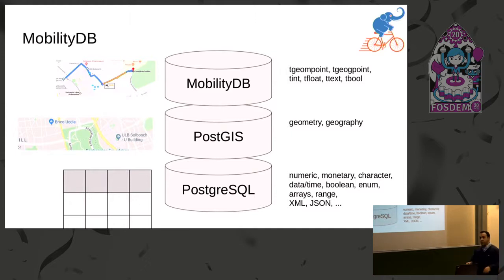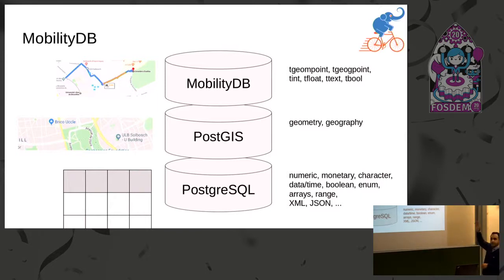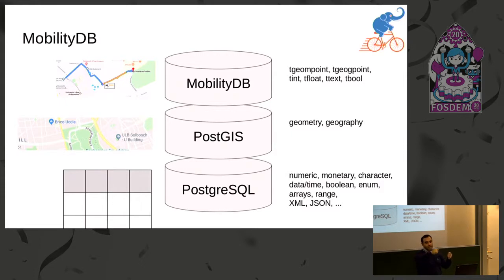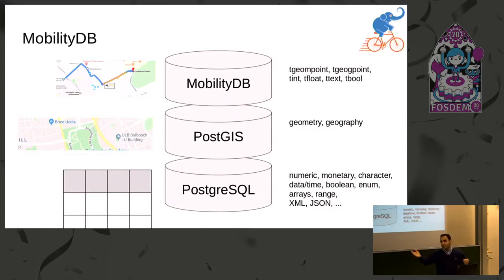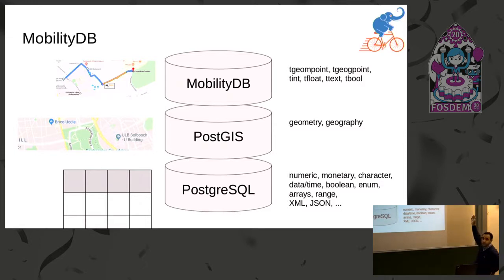You get temporal geography point according to the geographic or geometric coordinates, but also you get temporal float, temporal integer, temporal text, temporal boolean — and these are important for evaluating functions and predicates over trajectories. For example, the speed of a trajectory is changing over time, so that's a temporal float. You want to check a predicate: is the car now inside Brussels? The result will be a temporal boolean because sometimes it's true, sometimes it's false. So these types have to be supported, and the list of temporal types can be extended to support different applications.